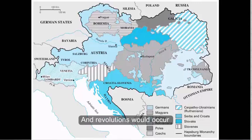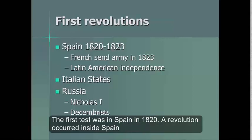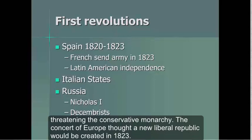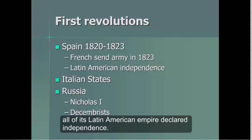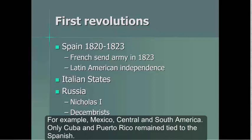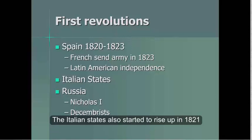Revolutions would occur very quickly. The first test was in Spain in 1820. A revolution occurred inside Spain threatening the conservative monarchy. The Concert of Europe feared a new liberal republic would be created, and in 1823 the French sent in 100,000 troops to put down the revolution. So while the Spanish revolution was quelled, all of its Latin American empire declared independence — for example, Mexico, Central and South America. Only Cuba and Puerto Rico remained tied to the Spanish.